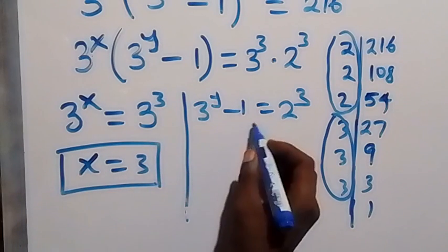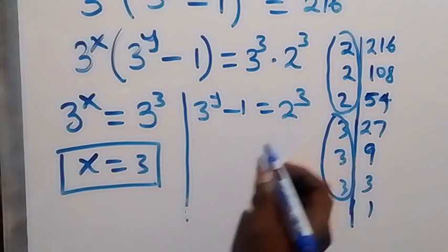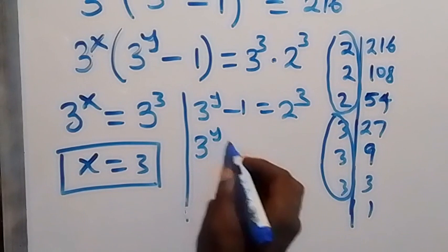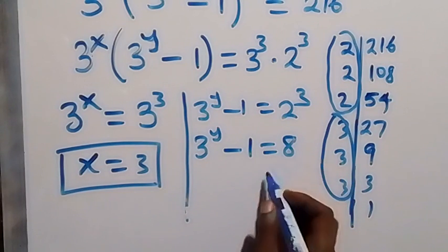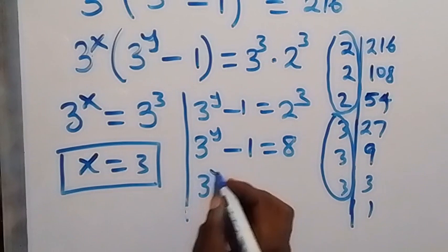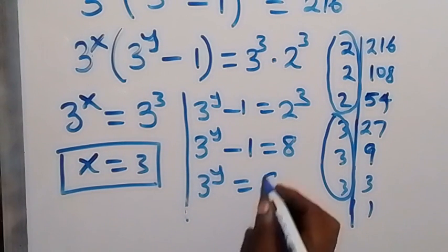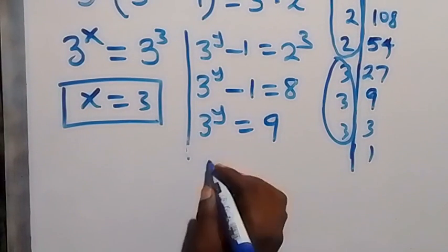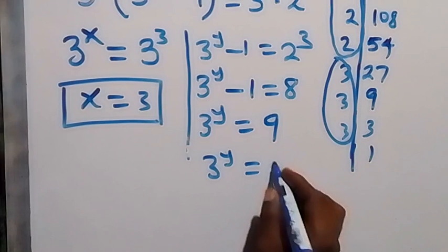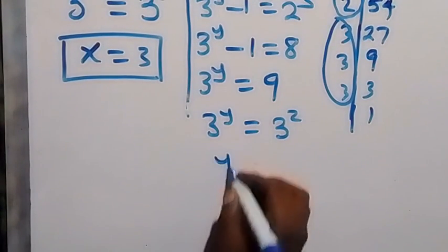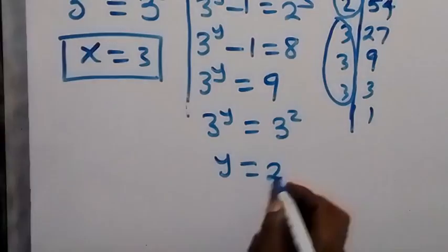On the other side, we write 2 raised to power 3 as 2 times 2 times 2, which is 8. So 3 raised to power (y minus 1) equals 8. Moving minus 1 to the right: 3 raised to power y equals 8 plus 1, which is 9. Since 9 equals 3 squared, we get y equals 2.